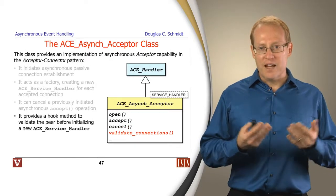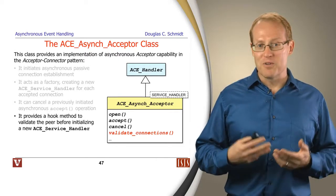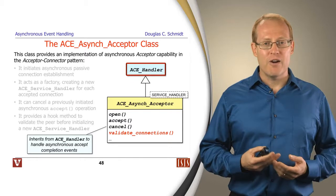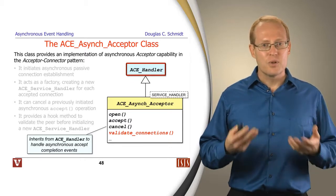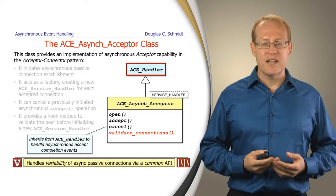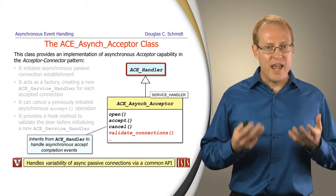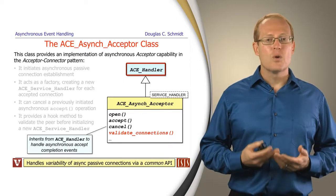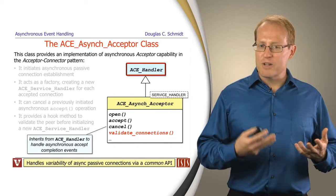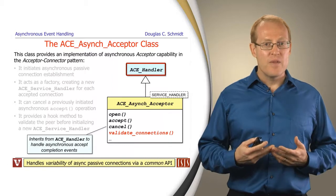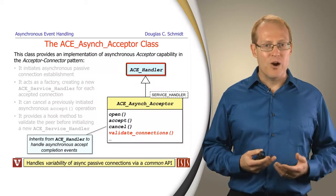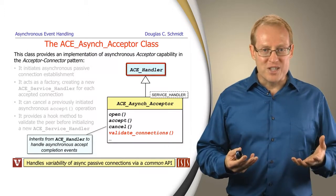It also allows you to cancel previously initiated asynchronous accept operations. It provides a hook method to validate connections before you actually create service handlers. You can do a form of call screening to ignore connections from clients you don't want to talk to. Because it inherits from ACE handler, it's able to handle the completion of asynchronous accept events in a common way. The ACE async acceptor, much like the ACE async connector, allow us to handle the variability of asynchronous connection establishment within a common API. This can work both for POSIX platforms that don't really support asynchronous accepts and connects, so we have to emulate them using threads, or the Windows platforms that do support natively asynchronous accepts and connects. They're very powerful, and you can hide all those diversities and heterogeneous differences behind a common API.